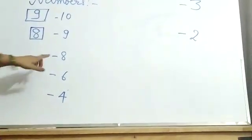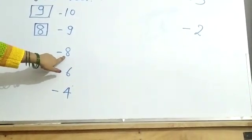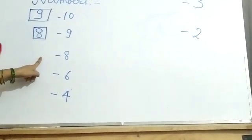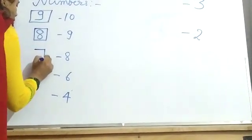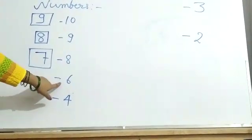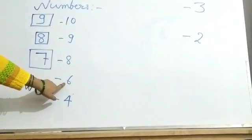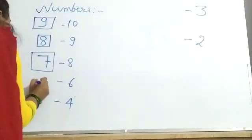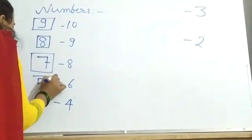What comes before 8? 8 se pehle kya aata hai? 8 se pehle 7. So write in box. 7. Okay. Next. What comes before 6? 6 se pehle kya aata hai? 5. Okay.